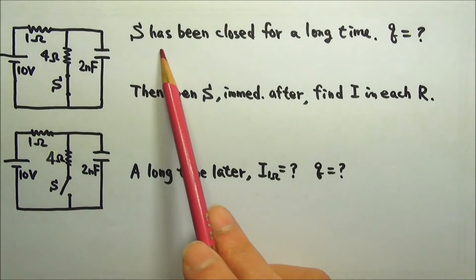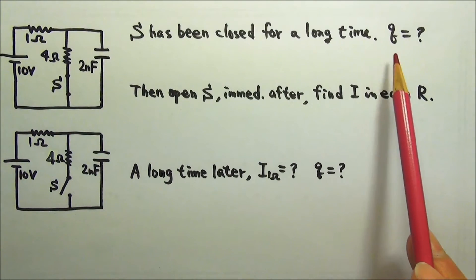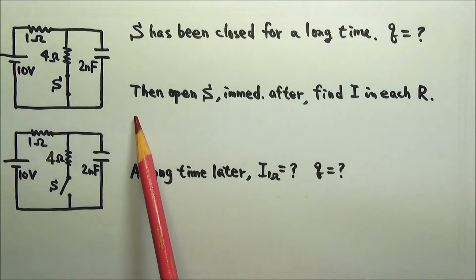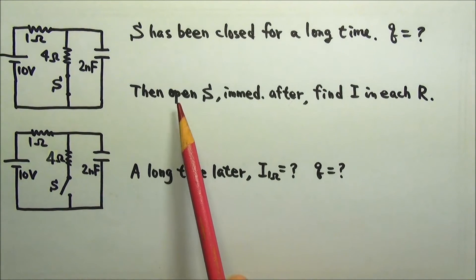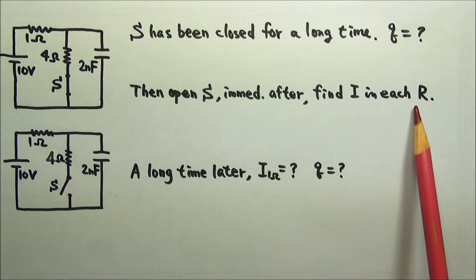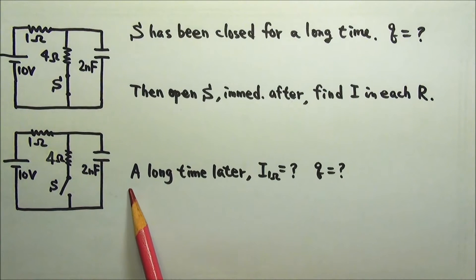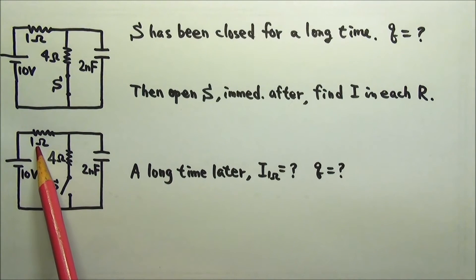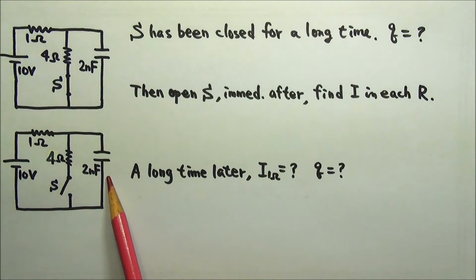The switch in this circuit has been closed for a long time. How much charge is on this capacitor? The switch is then opened. Immediately after the switch is opened, find the current in each resistor. A long time later, what are the current in the 1 ohm resistor and the charge on the capacitor?